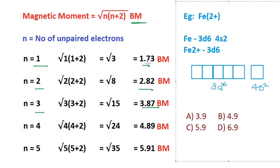I have Fe2+ ion for which I have to calculate the magnetic moment. Fe2+ configuration will be 3d6. I am going to fill the electrons here in the box representation.